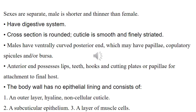Sexes are separate. The male is shorter and thinner than the female. They have a digestive system. Cross section is rounded. Cuticle is smooth and finely striated. Males have a ventrally curved posterior end, which may have papillae, copulatory spicules, and/or bursa. The anterior end possesses lips, teeth, hooks and cutting blades, or papillae for attachment to the definitive host.